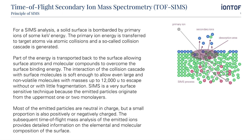For a SIMS analysis, a solid surface is bombarded by primary ions of some keV energy. The primary ion energy is transmitted to the target atoms via atomic collisions, and a so-called collision cascade is generated. Part of the energy is transported back to the surface, allowing surface atoms and molecular components to overcome the surface binding energy. The interaction of the collision cascade with the surface molecules is soft enough to allow even large and non-volatile molecules with masses up to 12,000 U to escape without or with little fragmentation.